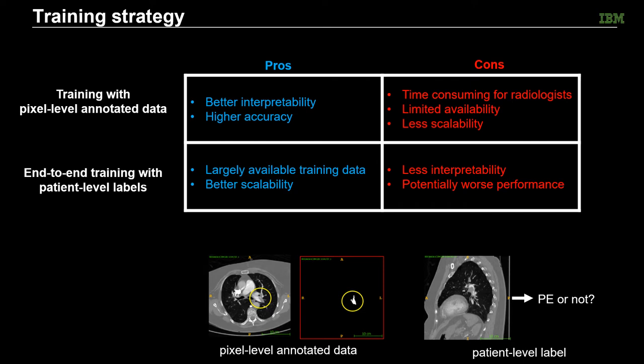On the other hand, end-to-end training with patient-level labels can access largely available training data with better scalability of the network. But the networks are often less interpretable with potentially worse performance. In this work, we combine these two training strategies into a hybrid training, which can benefit from the advantages of both sides.